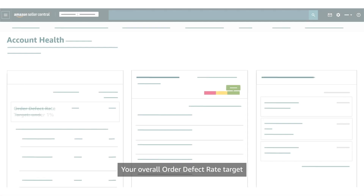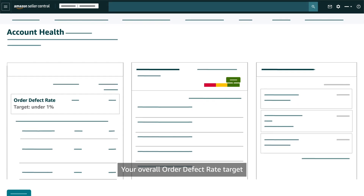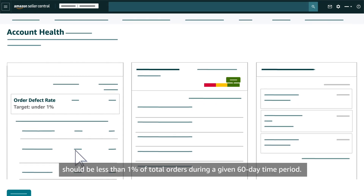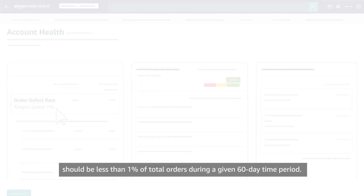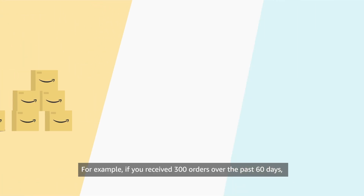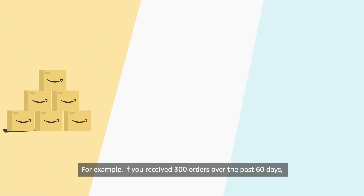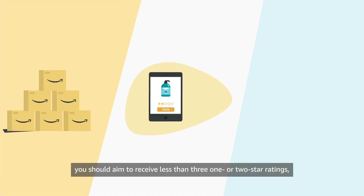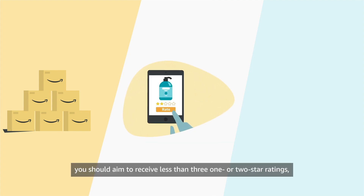Your overall order defect rate target should be less than 1% of total orders during a given 60-day time period. For example, if you received 300 orders over the past 60 days, you should aim to receive fewer than three 1- or 2-star ratings.